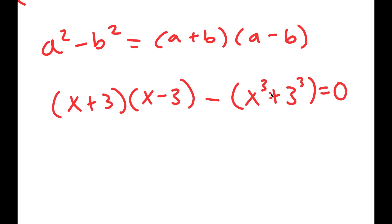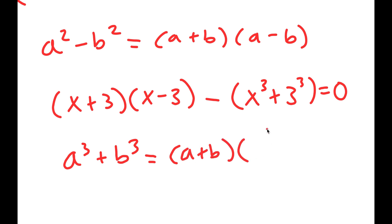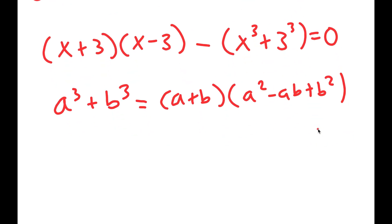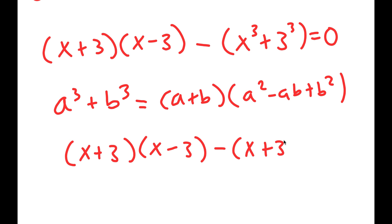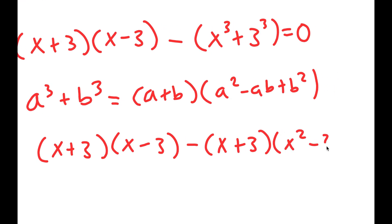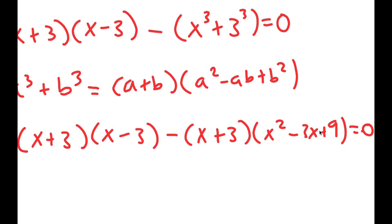Now, for x cubed plus 3 cubed, I apply the sum of cubes identity: a cubed plus b cubed equals (a + b)(a squared minus ab plus b squared). So x cubed plus 3 cubed turns into (x + 3)(x squared minus 3x + 9), and the equation becomes (x + 3)(x - 3) minus (x + 3)(x squared minus 3x + 9) equals 0.